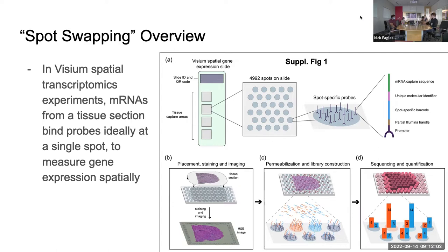The first thing — I think most of us are familiar with the Visium protocol. The authors start by introducing what that is. They have a nice figure illustrating that a Visium Spatial Transcriptomics experiment has a bunch of spots on a slide, and each spot has probes that bind to specific mRNAs. Typically you place a tissue on this grid of spots, and they do this thing called permeabilization, which releases the mRNAs from the tissue onto the spots.